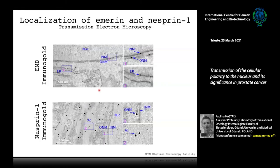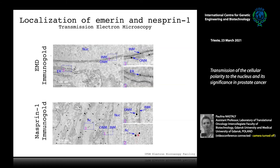We used immuno-gold staining and transmission electron microscopy to localize emerin. Emerin was found at the inner and outer nuclear membrane, and also at endoplasmic reticulum membranes. We also analyzed nesprin-1, one of emerin's interactors: it was found at the outer nuclear membrane as reported in literature, but also on actin fibers in the cytoplasm — new information.